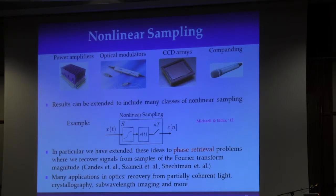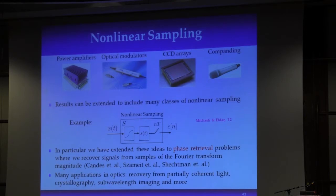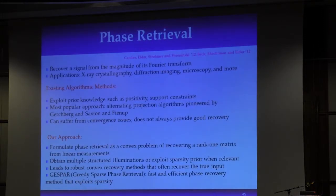We can also extend these ideas to nonlinear sampling, which is very important in optics for phase retrieval problems — where we only have the magnitude of the data. By exploiting structure and using this sampling approach, we get both bandwidth extrapolation (increased resolution) and compensation for the unknown phase — doing phase retrieval and bandwidth extrapolation simultaneously just by exploiting signal structure. In the optics example, we lose all high-frequency content and only get the magnitude of a low-pass version of the signal, but using these tools we can achieve perfect recovery.